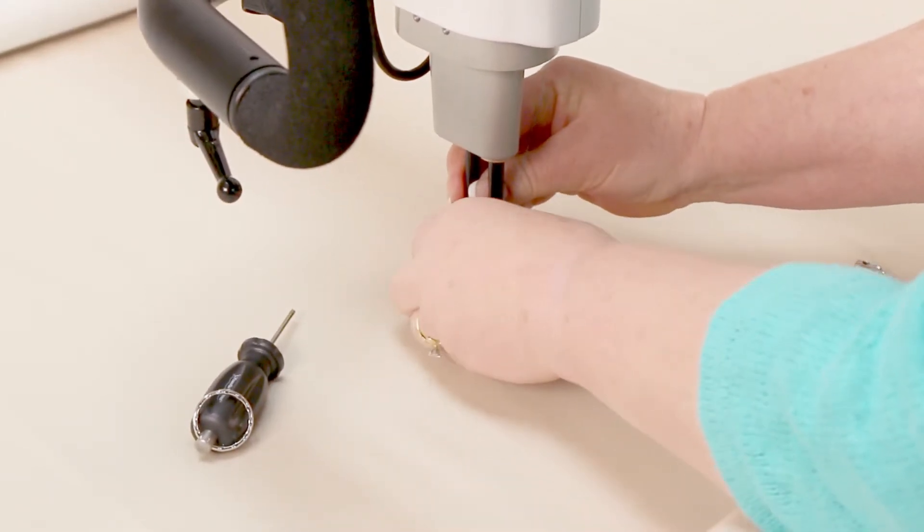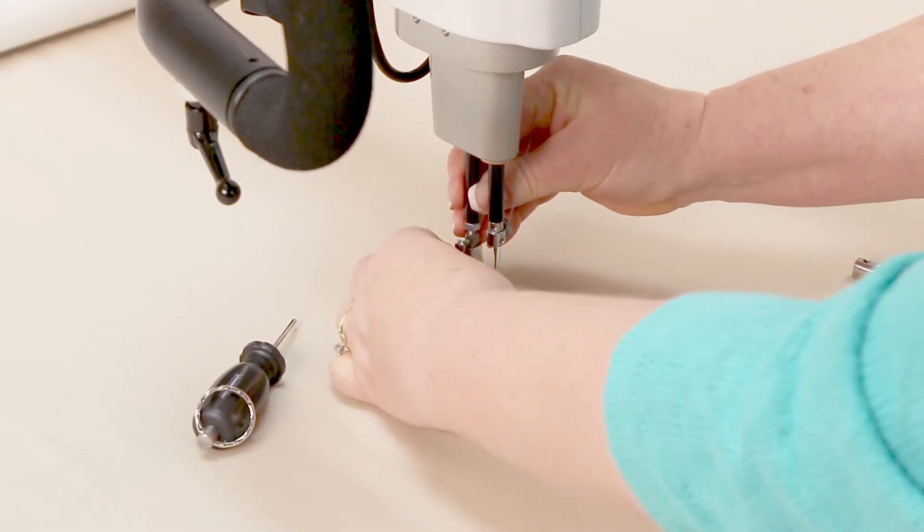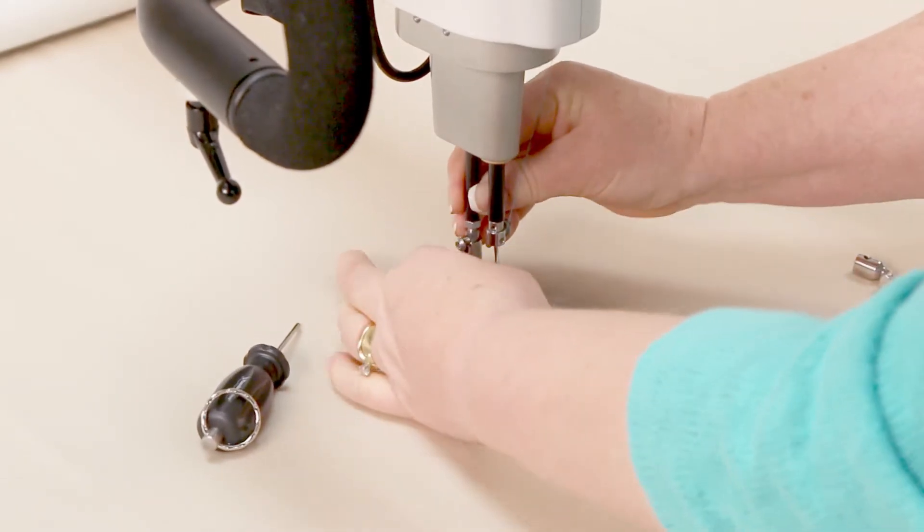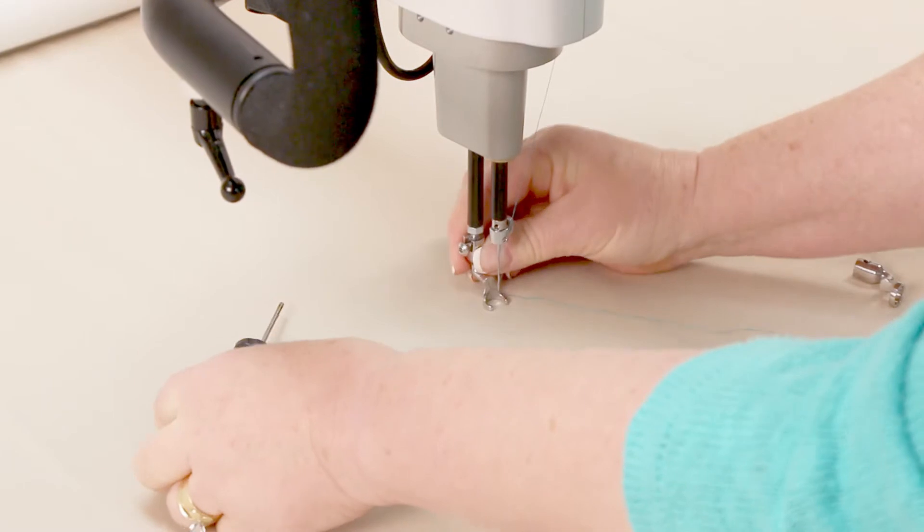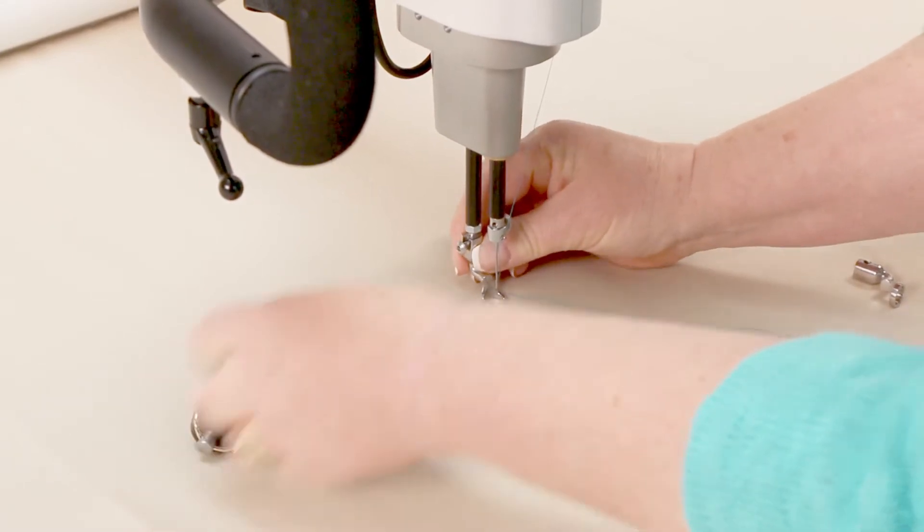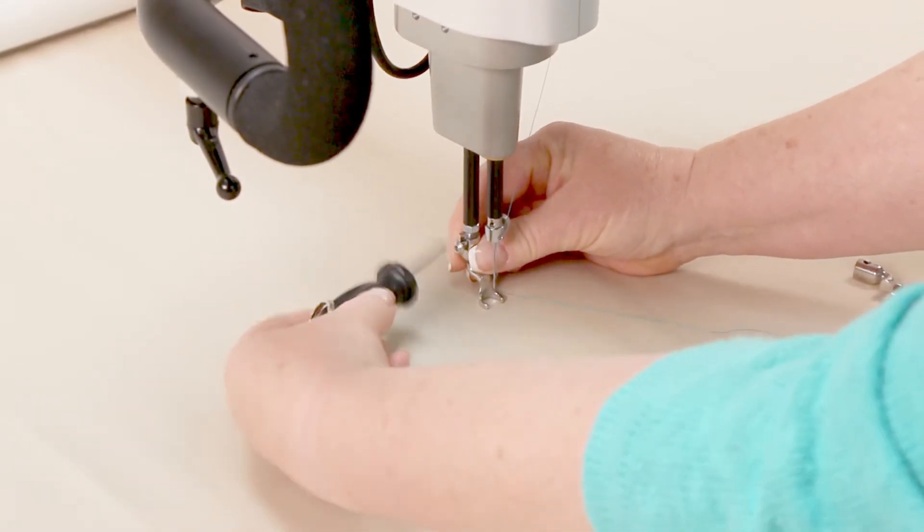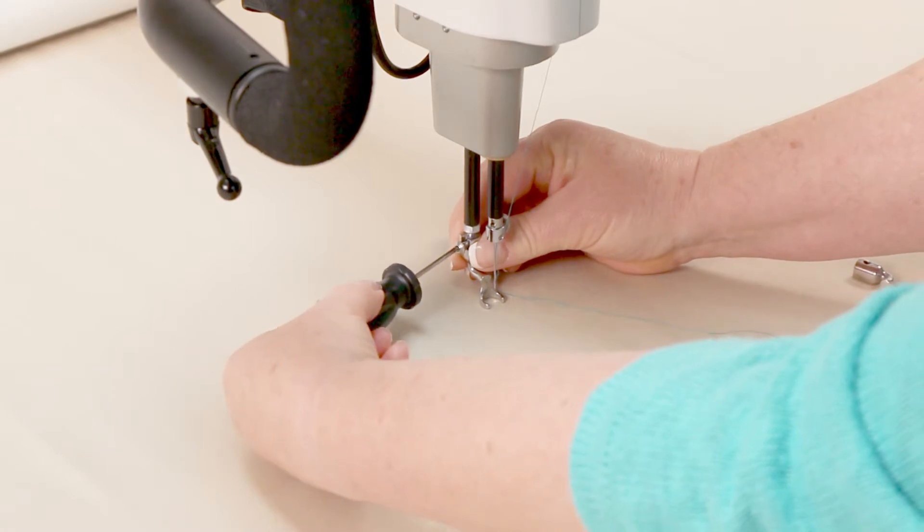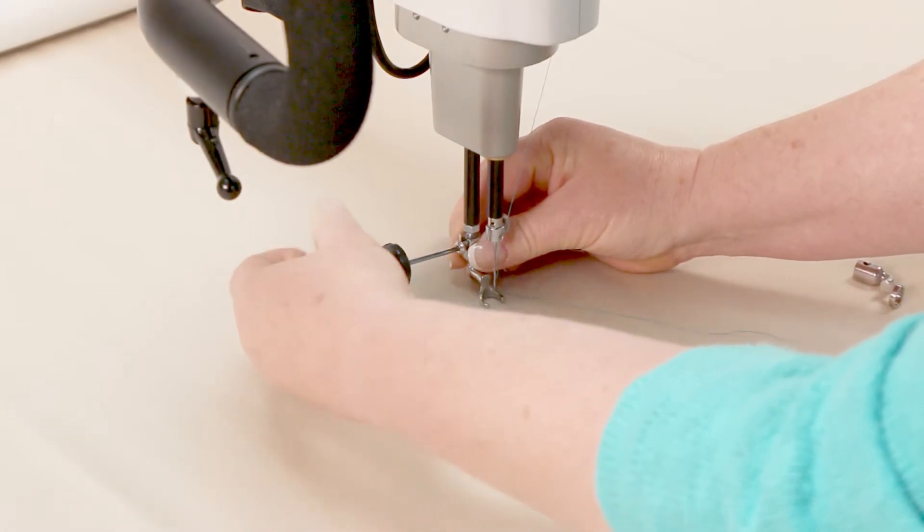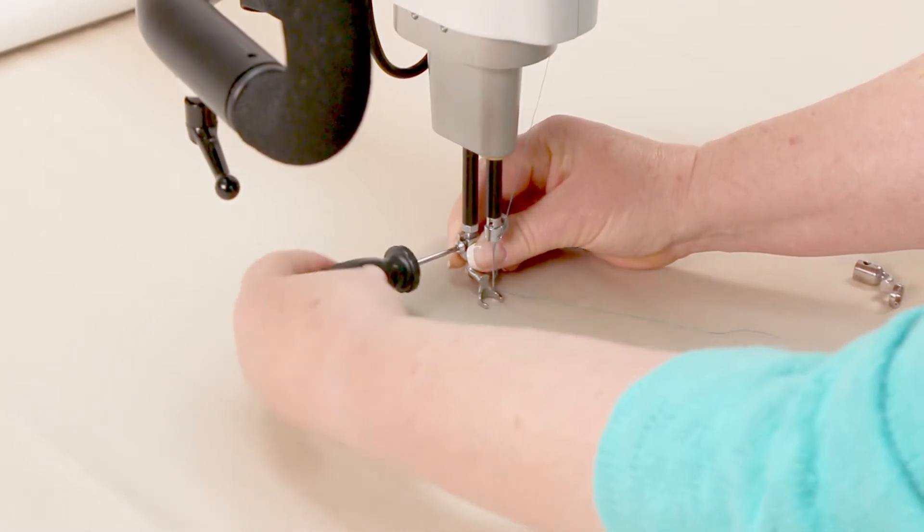And then again, lift that up and you can slide that back on. You want to make sure that's all the way up in there, or the screw won't screw back in. So it's all the way up, and then go ahead and tighten that screw back on until it's snug.